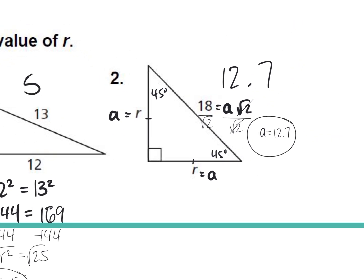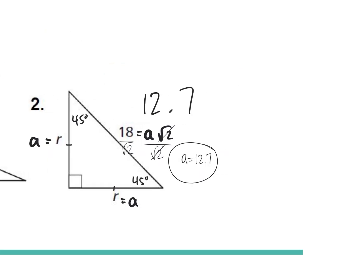Now there was another way to do this problem. Dylan, can you walk me through what you did? I did 18 squared — 324 — divided by 2, and then you square root it. Oh, so you divided by 2 and then took the square root? Yeah. Perfect.